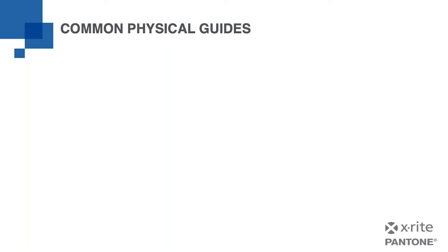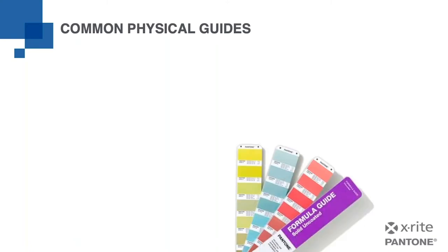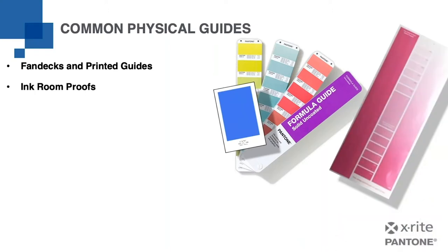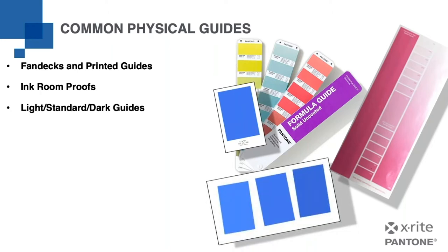There are a lot of common physical guides available. We're going to look at a couple that are widely used. All of these are good for color selection and designing with color. Fan decks and printed guides, for example, are usually printed in a very tightly controlled print run. These represent libraries of colors like those from Pantone or colors that are important to a brand. Inkroom proofs are made in very small numbers, in many cases on the actual substrate, often before the first time the colors can be run by the printer. An item called an LSD, or light standard dark, represents the range of acceptable color lightness, and these are commonly used.